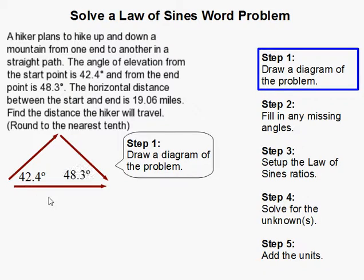this angle is 42.4. From the end point it's 48.3, so this angle is 48.3 degrees. They also tell us that the distance from the starting to the end if we went through the mountain is 19.06 miles. I'm also going to label this as side a and this is side b, and you'll see why very soon.